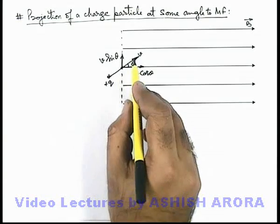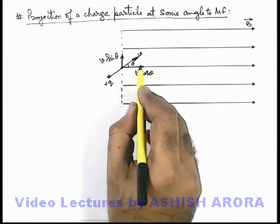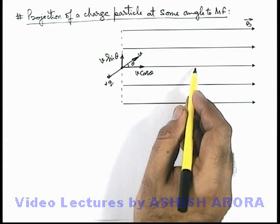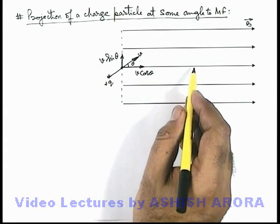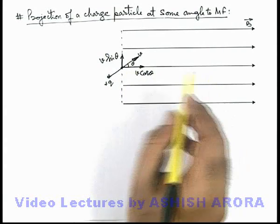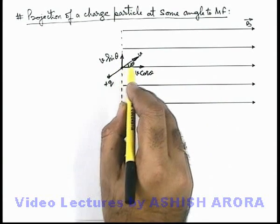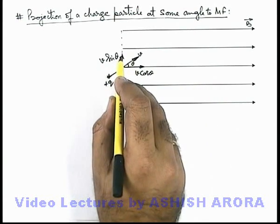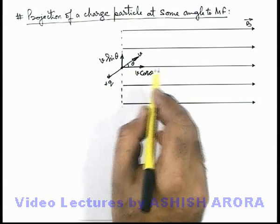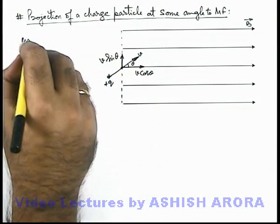When a charge moves parallel to the magnetic field, it does not experience any magnetic force and it has a tendency to move straight. The component of velocity with which the charge is moving perpendicular to the direction of magnetic field causes it to experience a magnetic force.